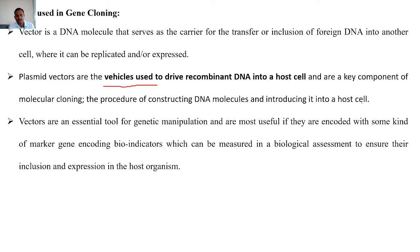Vectors are essential tools for genetic manipulation — meaning gene expression and gene cloning. When we do genetic manipulation, we cut the unnecessary part and insert the gene of interest, using different types of restriction enzymes. This is the process of genetic manipulation. Vectors are most useful if they are encoded with some kind of marker gene.